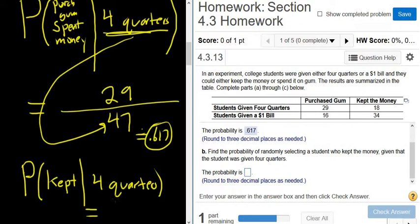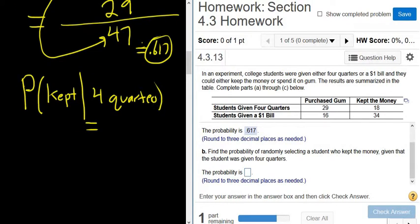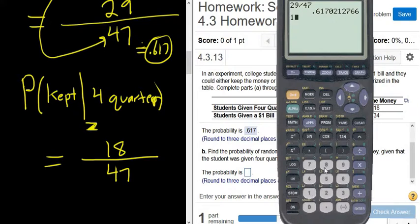So just like before, right, we focus on what's after the given. So what's after the given is what goes on the bottom. So four quarters, we're only focusing on that top row. So 29 plus 18 is 47. And from these, we only want the ones that kept the money. So just from these, it would be 18. You don't add up the 18 and 34. That would be super wrong, right? Because it's only from the ones that were given the four quarters. So 18. So 18 over 47. So 18 over 47. Boom, there it is, .383.